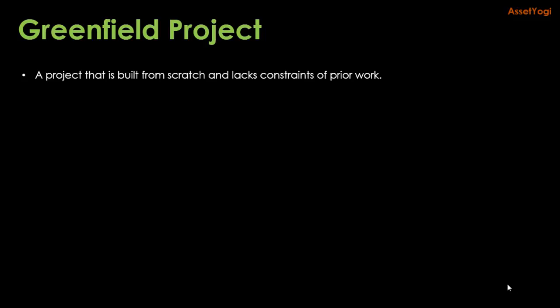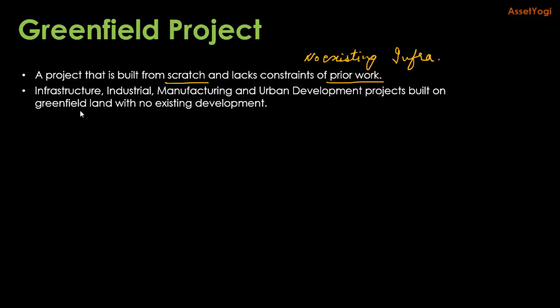Let us first understand what is a greenfield project and what are the stages involved in it. In simple terms, a greenfield project is a project that is built from scratch and it lacks constraints of prior work. Basically, in a greenfield project, there are no existing buildings or infrastructure — everything is built from scratch. A greenfield project can include any infrastructure project, industrial or manufacturing project, or any urban development project that is built on greenfield land with no existing development.